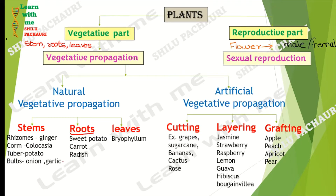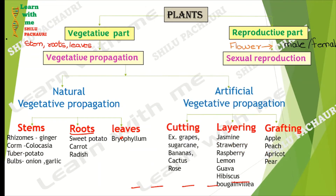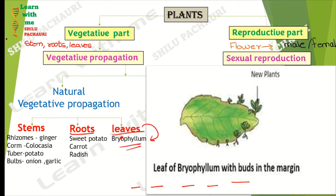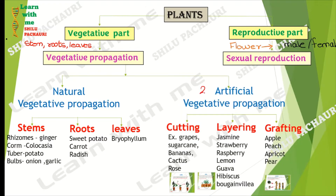Roots can also have buds, from which new plants can be produced. Examples include carrot, turnip, radish, sweet potatoes. When these roots are grown in soil, new plants can develop from them. The third mode is leaves. The most common example is Bryophyllum — buds are present at its leaf margins, which either detach and fall on soil to produce new plants, or remain attached and grow into new plantlets. These are the three modes of natural vegetative propagation.